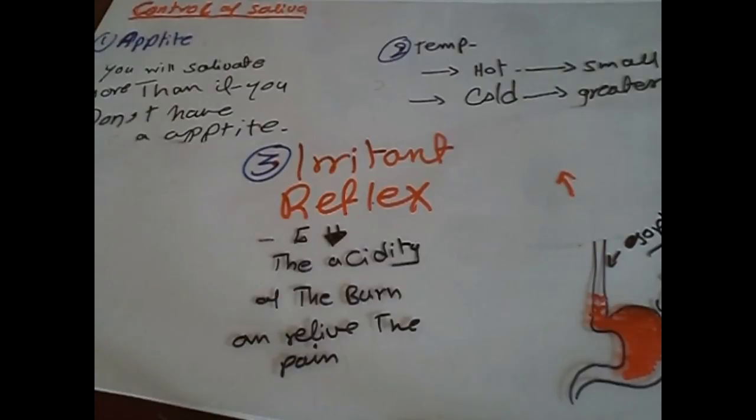The second, number two, second point, the constituent of saliva. Sympathetic produce mucus saliva. Saliva with lots and lots of mucus in it. While the parasympathetic produce watery saliva. Sympathetic mucus, parasympathetic watery. Sympathetic small amount, parasympathetic large amount. Hopefully, this point is clear for you.